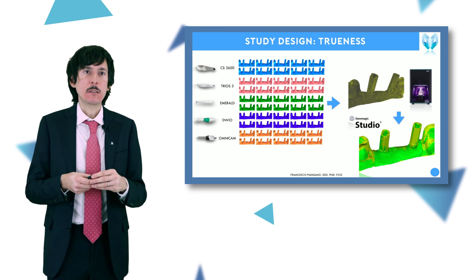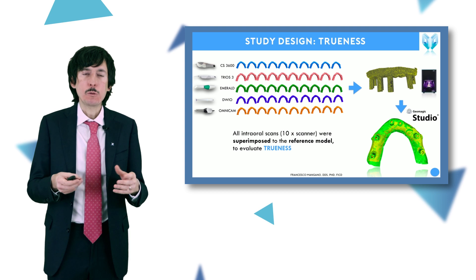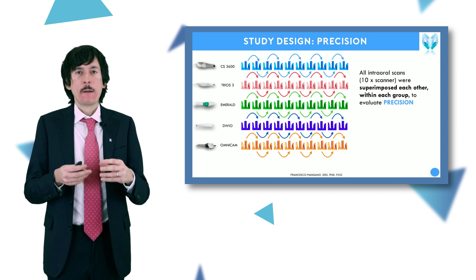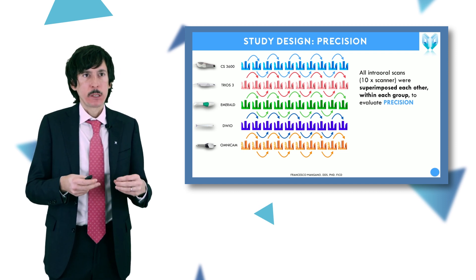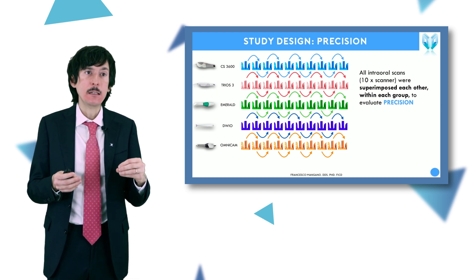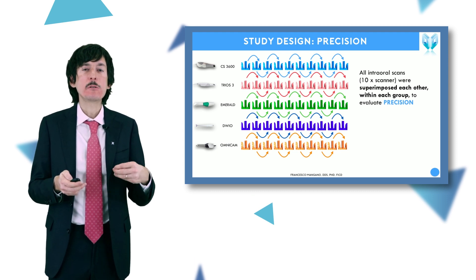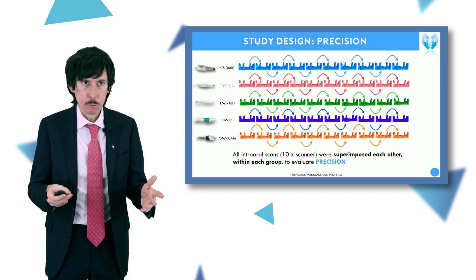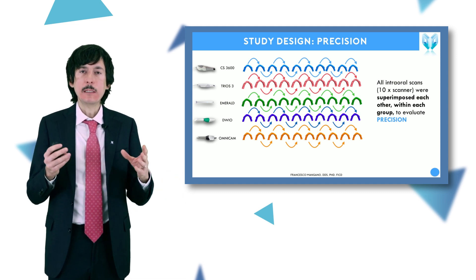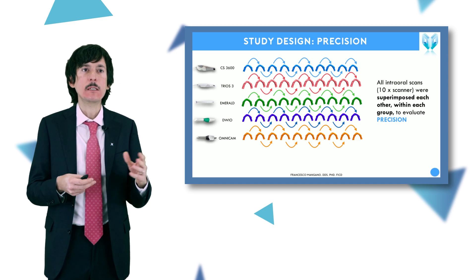The same protocol was used for the bridge and for the full arch — it is essentially a mesh-to-mesh superimposition to evaluate trueness. To evaluate precision, we superimposed the different scans taken within each scanner group to evaluate consistency of results.